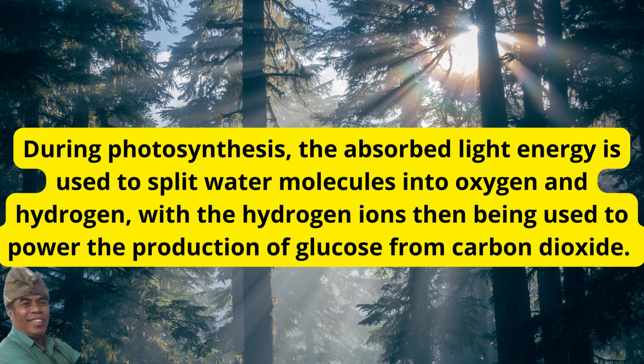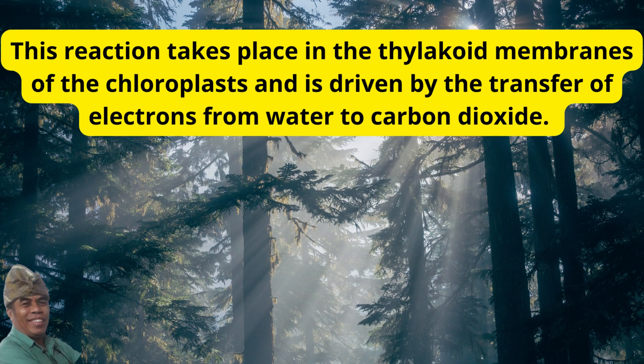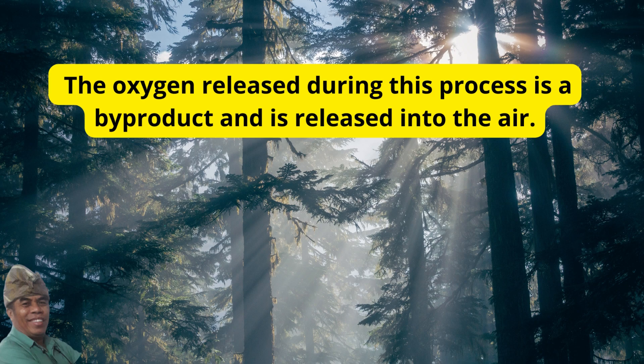During photosynthesis, the absorbed light energy is used to split water molecules into oxygen and hydrogen, with the hydrogen ions then being used to power the production of glucose from carbon dioxide. This reaction takes place in the thylakoid membranes of the chloroplasts and is driven by the transfer of electrons from water to carbon dioxide. The oxygen released during this process is a byproduct and is released into the air.